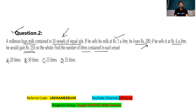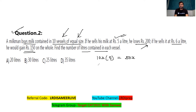The total number of vessels are 10, and all vessels are of equal size. Assuming every vessel contains x litres, the total litres he is selling is 10x. When selling at 5 rupees a litre, the total money he gets is 50x. When selling the whole milk at 6 rupees a litre, he gets 60x.